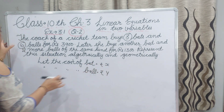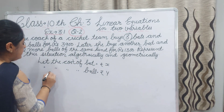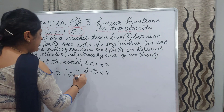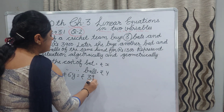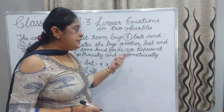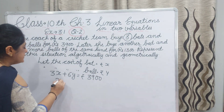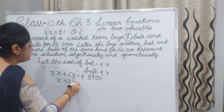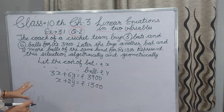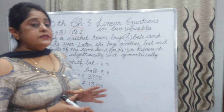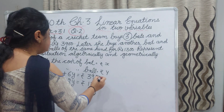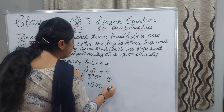The bat cost is X and there are 3 bats, so we get 3X plus 6Y equal to Rs. 3,900. That is our first equation. For the second equation: another bat and 2 more balls gives X plus 2Y equal to Rs. 1,300. This is equation 1 and this is equation 2.